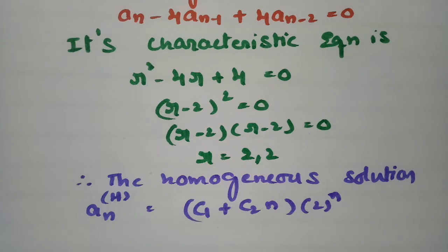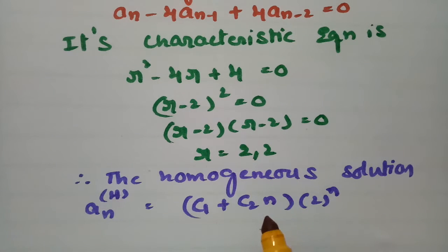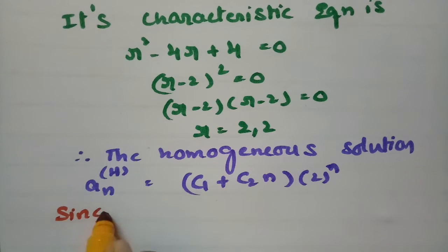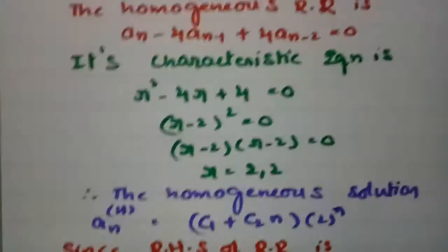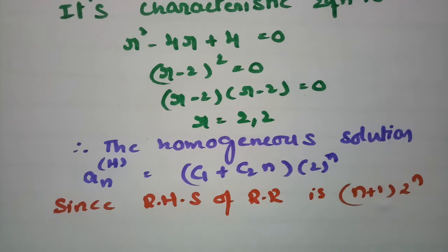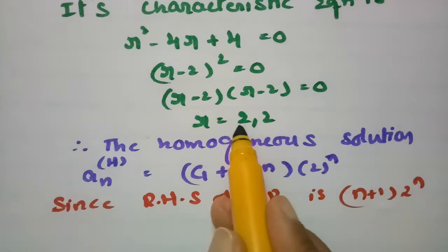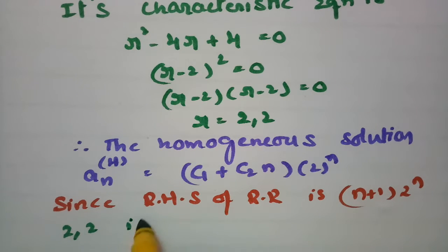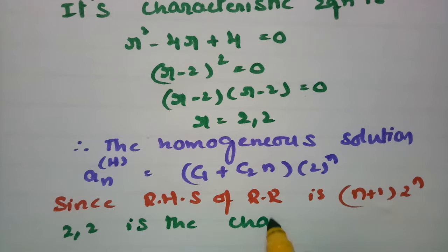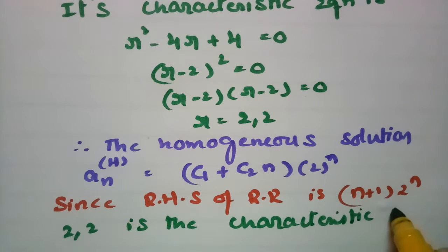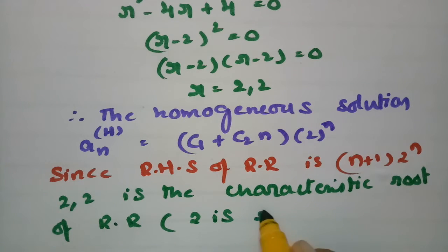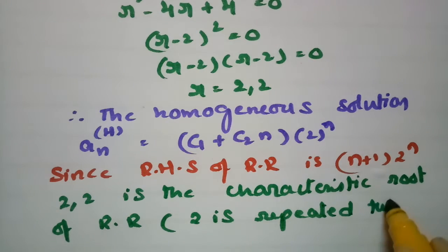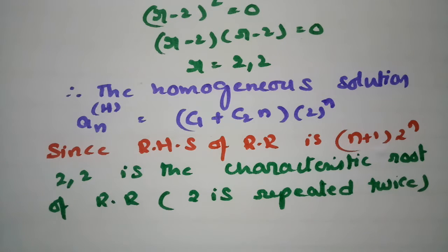Now, how to write the particular solution? Since the RHS of the recurrence relation is (N+1)·2^N and the characteristic roots are 2, 2 — note that 2 is repeated twice — we assume the particular solution accordingly.